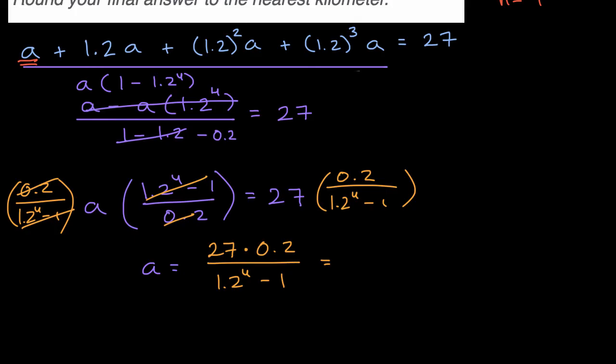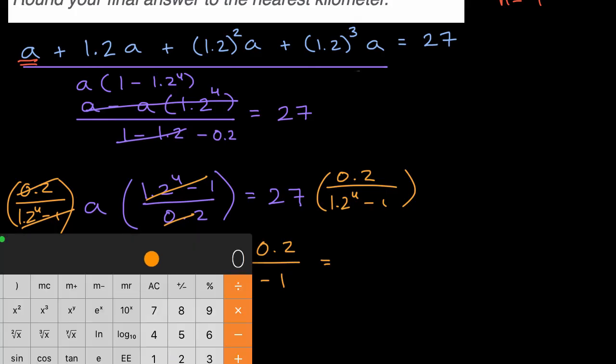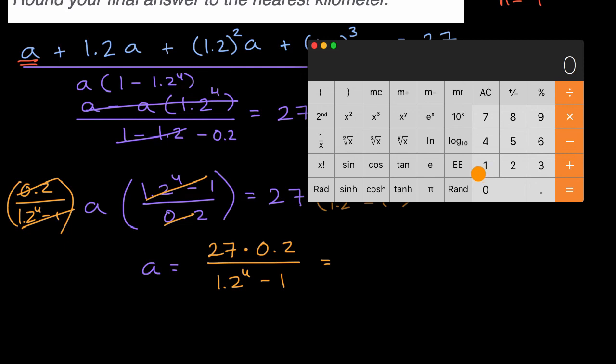And so, I'll get the calculator out. This will give us, actually I'll evaluate this denominator first. So, I'll have 1.2 to the fourth power, which is equal to, minus one is equal to, now it's in the denominator, so I could just take the reciprocal of it, and then multiply that times 27 times 0.2, is equal to 5.029.